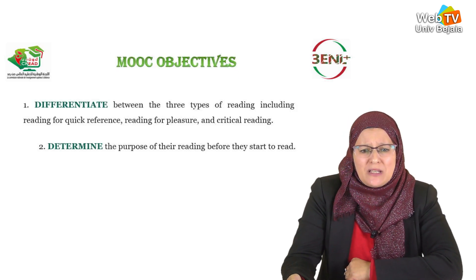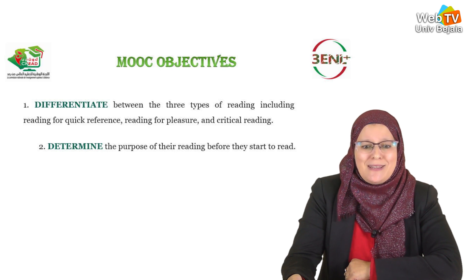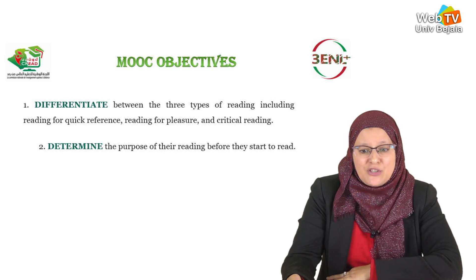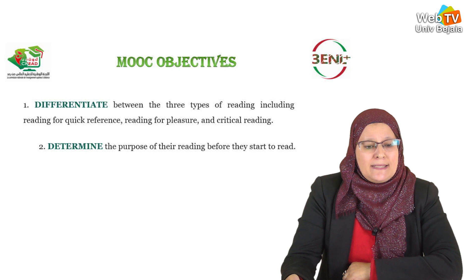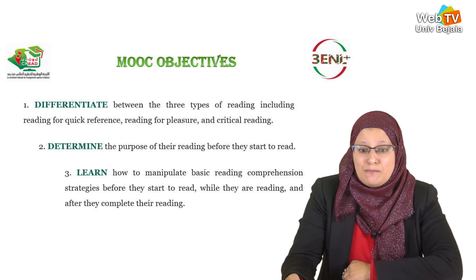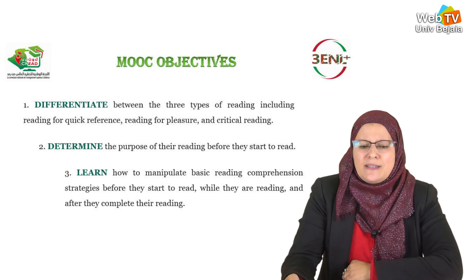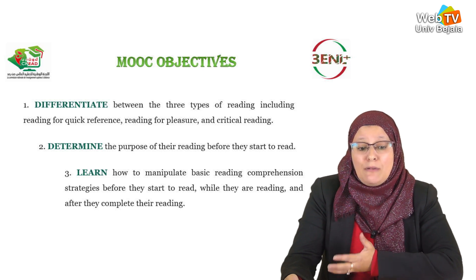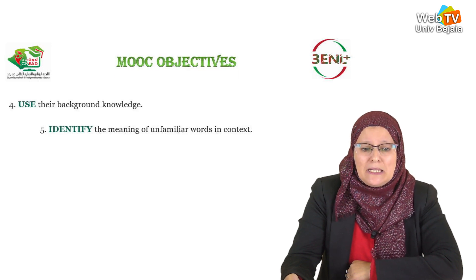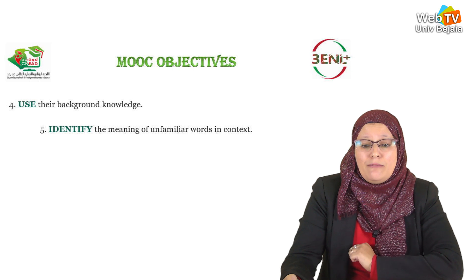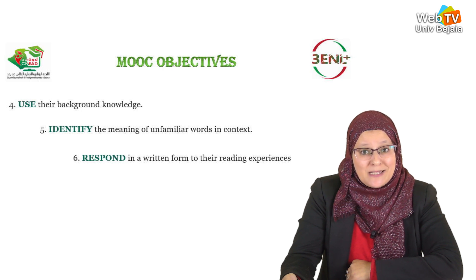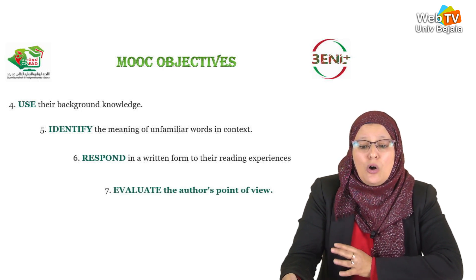The objectives of this MOOC are: first, differentiate between the three types of reading, including reading for quick reference, reading for pleasure, and critical reading. Second, determine the purpose of their reading before they start to read. Third, learn how to manipulate basic reading comprehension strategies before, during, and after they complete their reading. Fourth, use their background knowledge. Fifth, identify the meaning of unfamiliar words in context. Sixth, respond in a written form to their reading experiences. And seventh, evaluate the author's point of view.